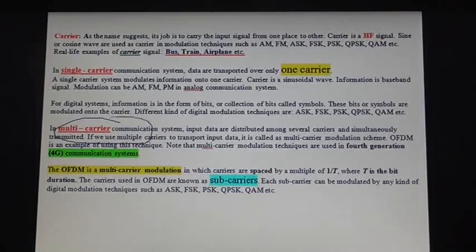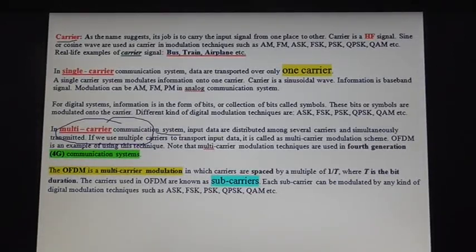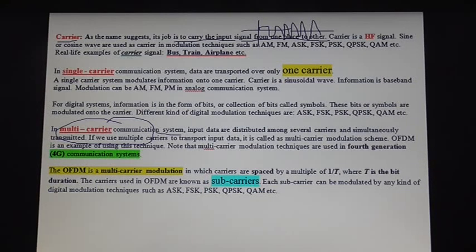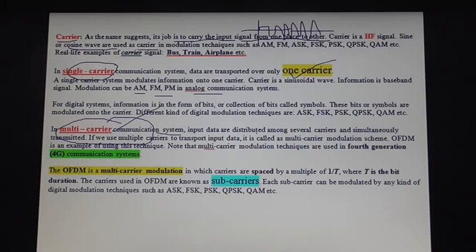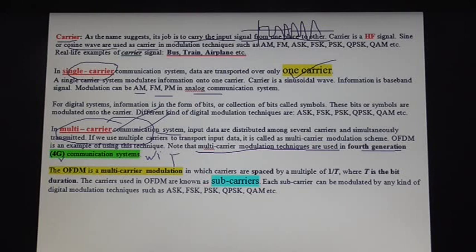In a multi-carrier communication system, the carrier is used to carry the input signal from one place to another. The carriers used in communication systems are sinusoidal signals — either sine wave or cosine wave. In single-carrier communication systems, we use one carrier, such as AM, FM, etc. In multi-carrier communication systems, we use more than one carrier — two or more carriers — to transmit the input data. Such multi-carrier techniques are used in 4G cellular systems, Wi-Fi, WiMAX, etc.